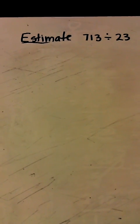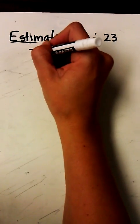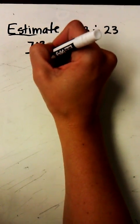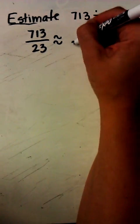Okay, estimating quotients with two-digit divisors. First thing I'm going to do is I'm going to rewrite my problem as a fraction. 713 divided by 23 approximately equals, I'm going to round 23 to 20.